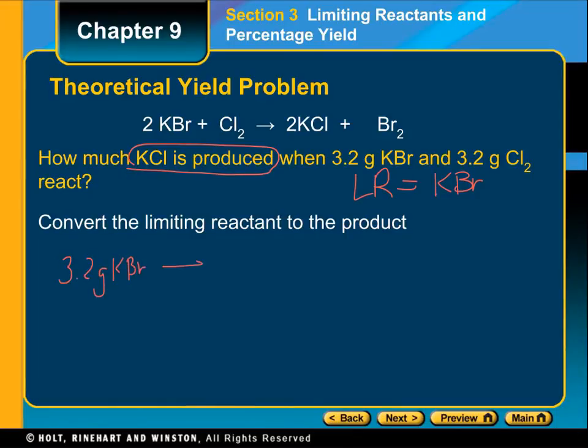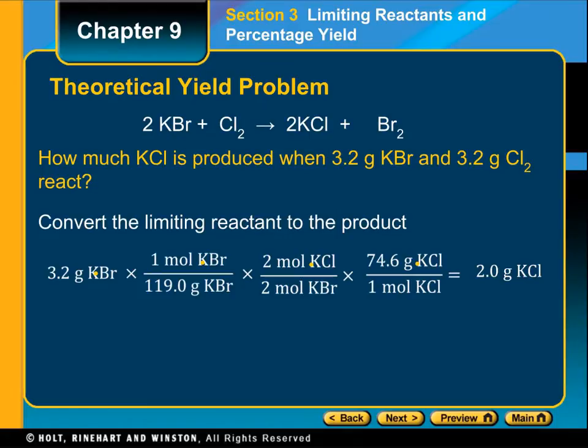We're going to convert it through a series of steps into how much KCl we can make, and then we'll take that amount, which is our theoretical amount, and we will compare it with the actual yield. Here's the work again: you have 3.2 grams of KBr, you convert it.